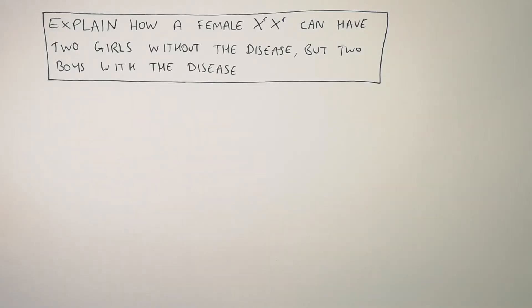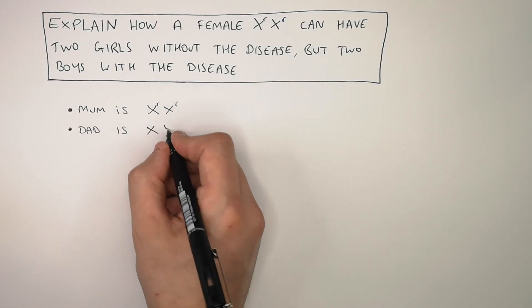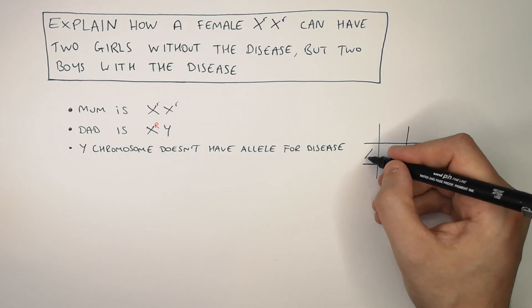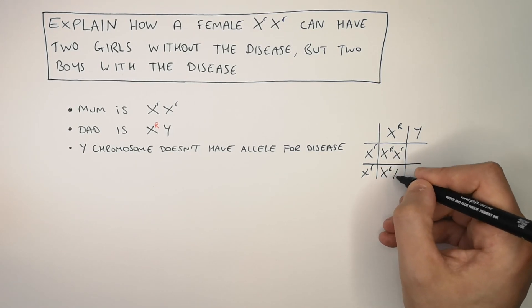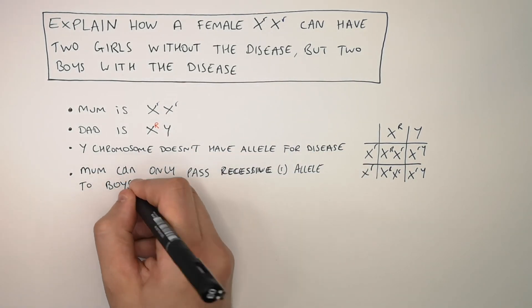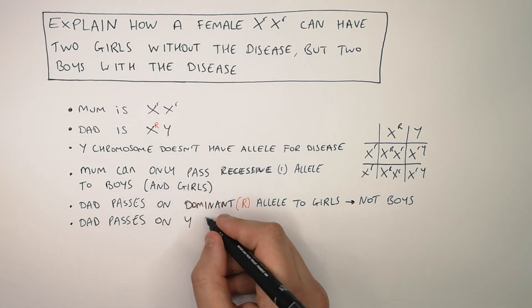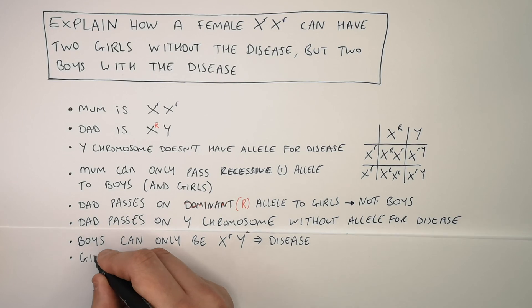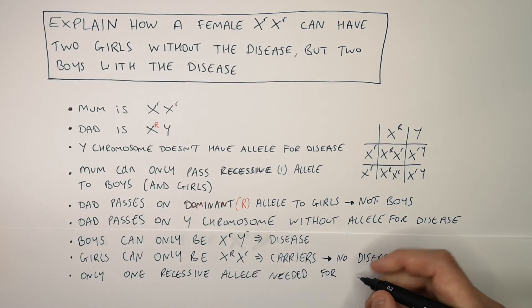Pause the video to attempt this six-mark question — the answers follow. Mum is X small r X small r, and dad is XY where the X carries the dominant allele and the Y chromosome has no allele for the disease. Doing the genetic cross using a Punnett square: female gametes are X small r and X small r; male gametes are X big R and Y. The outcomes are X big R X small r, X big R X small r, X small r Y, X small r Y. Mum passes her recessive small r allele to both boys and girls. Dad passes his dominant big R allele to the girls but not the boys, and passes the Y chromosome without the disease allele to his boys. Boys can only be X small r Y, meaning they have the disease, whereas girls can only be X big R X small r, meaning they are carriers with no disease. This is because only one recessive allele is needed for the disease to be expressed in boys.